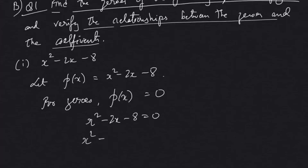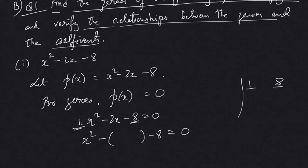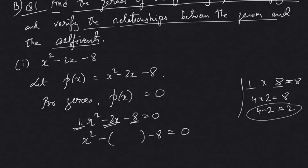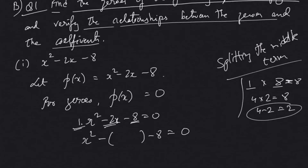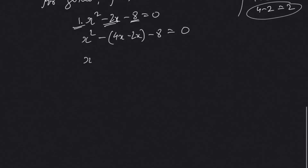For zeros, the polynomial should equal zero: x² - 2x - 8 = 0. Let's factorize using the splitting the middle term process from Class 9. The coefficient of x² is 1 and the constant is 8; 1 × 8 = 8. The factors of 8 are 4 and 2, since 4 × 2 = 8 and 4 - 2 = 2, which matches the middle term.